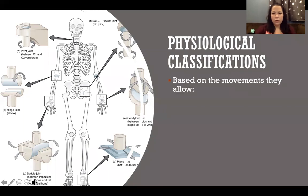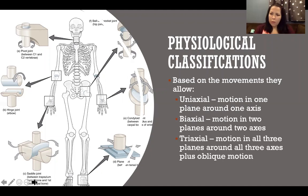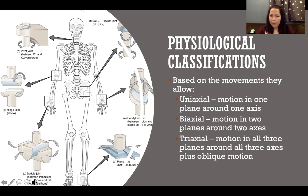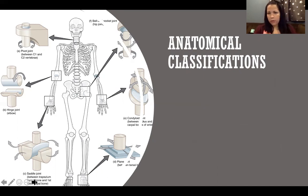Physiological classifications of synovial joints are based on the movements they allow. A joint moving in one plane around one axis is uniaxial; two planes around two axes is biaxial; three planes around three axes is triaxial. A biaxial or triaxial joint also includes movement in oblique planes that are combinations of the allowed planes of motion.